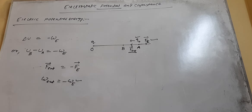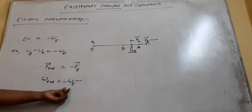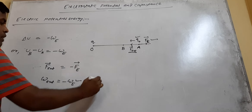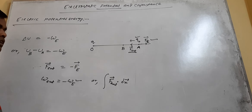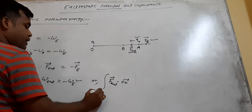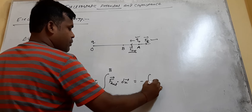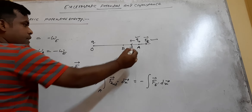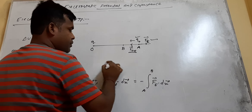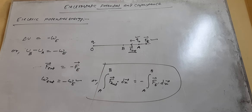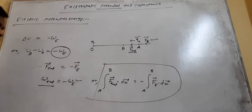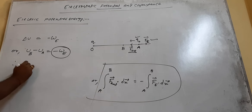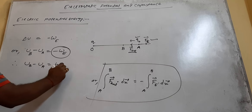When you apply the external force, which has the same magnitude as the electric force but opposes it in direction, the charge Q0 will move from A to B with the same velocity, with zero acceleration. Then the net work is zero. That means W external equals negative W electric. So W external equals UB minus UA.